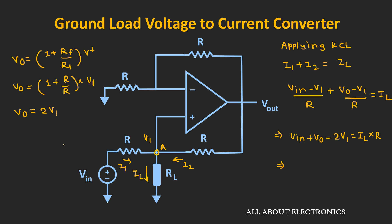Now let us put this value of Vo into the expression and simplify. Substituting, we can write Vin plus 2V1 minus 2V1 equals IL times R. Simplifying, the load current IL equals the input voltage Vin divided by the value of resistor R. As you can see, once we set the value of resistor R, the load current IL is directly proportional to the input voltage Vin, and it is independent of the value of load resistance RL. So in this way, using the op-amp, we can design this voltage to current converter.